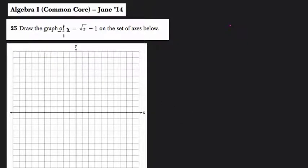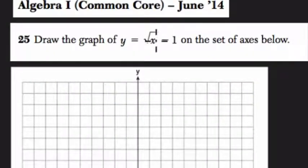So they tell us in this problem to draw the graph of y equals the square root of x minus 1 on the set of axes below. So here we're given a function and we're going to graph it.